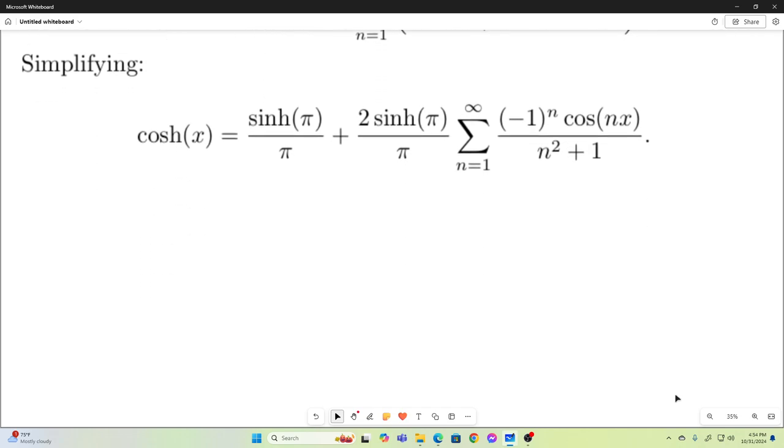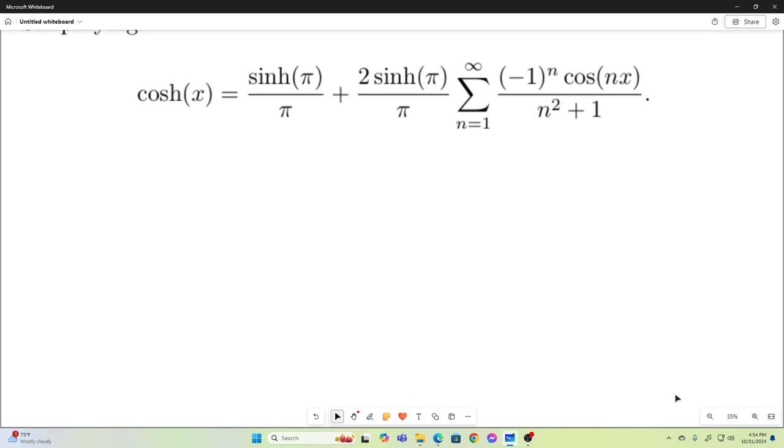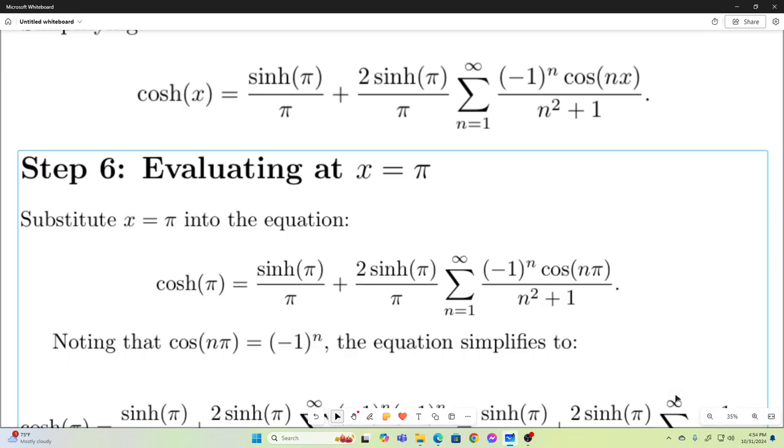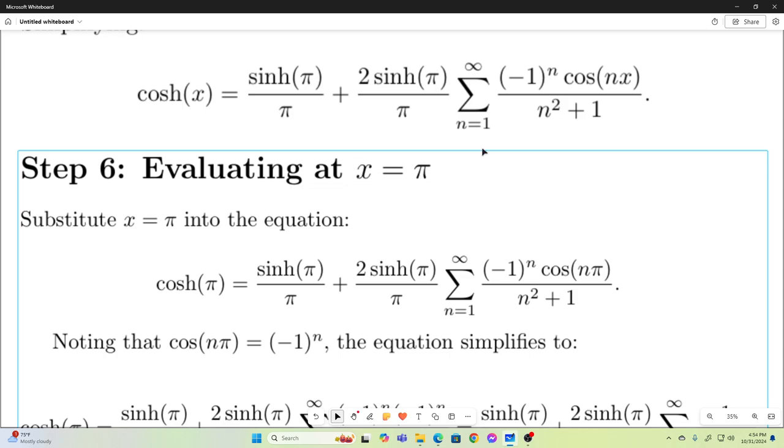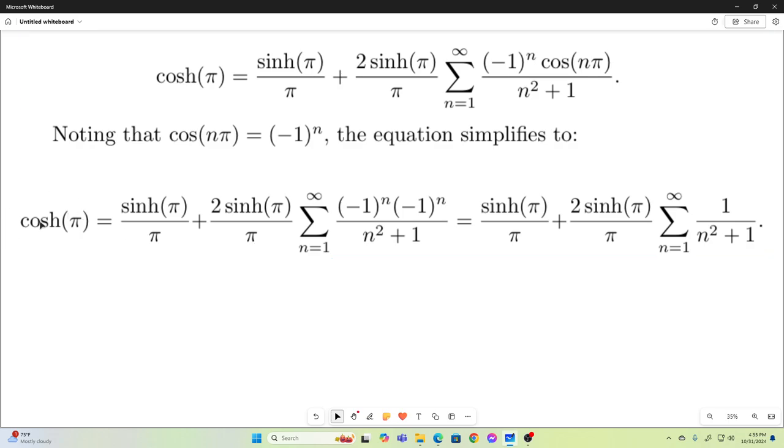So basically, we're almost done. So now what we want to do is take this equation right here, and this is good on negative pi to pi. So we can let x equal pi and this equation will hold. So let's set x equal to pi. And that's going to give us this. And wouldn't you know it, a cosine n pi again turns up. That is going to equal negative one to the n for integers n starting at one. That negative one to the n will be multiplied by this negative one to the n. And it's just going to cancel out and just become a one.